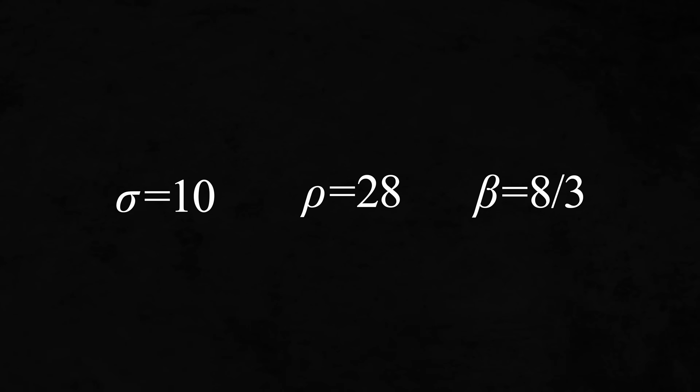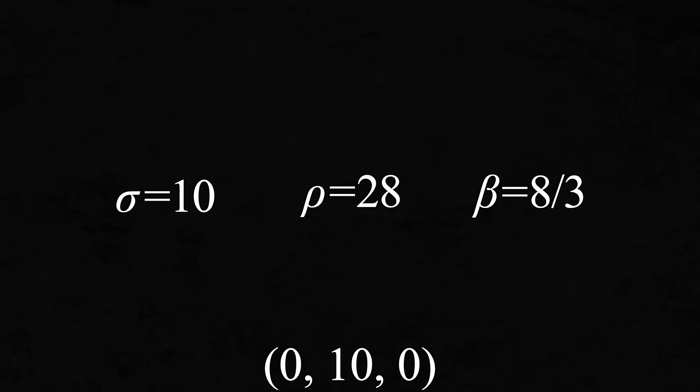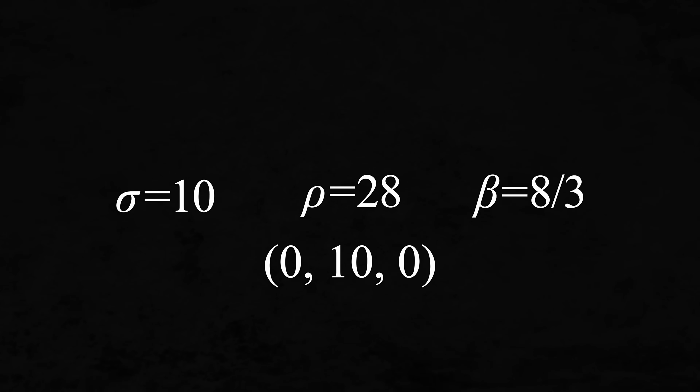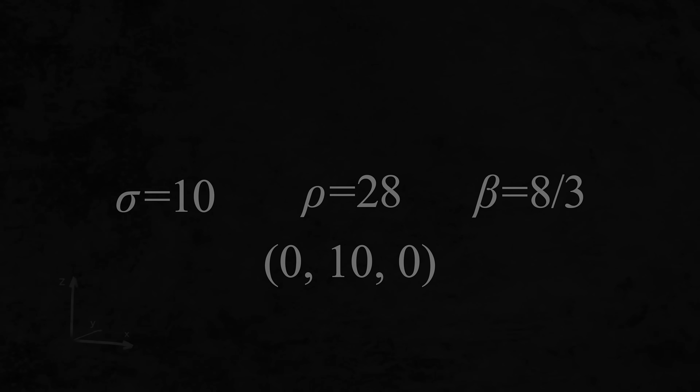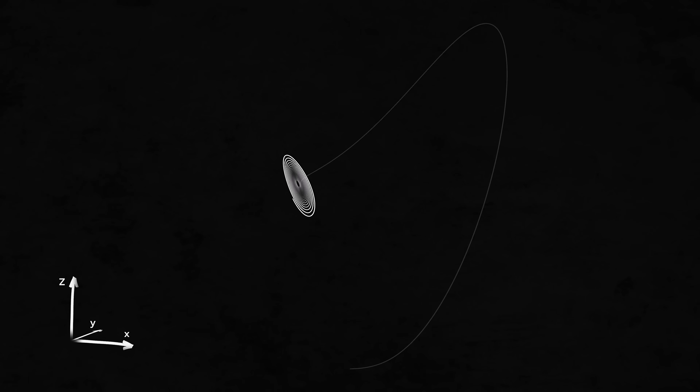But this was what he saw. Using these values for the parameters and starting here, this is how the system evolves. Remember, the X, Y, and Z coordinates here specify a particular overturning cell in the atmosphere.